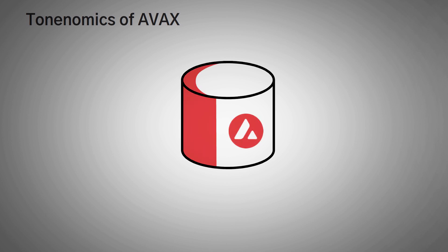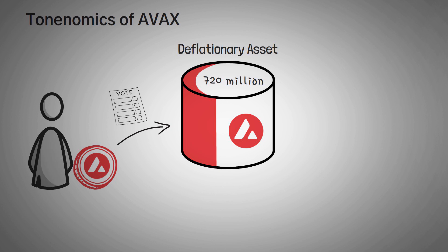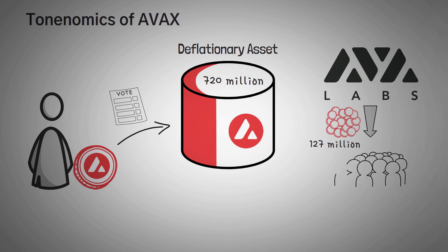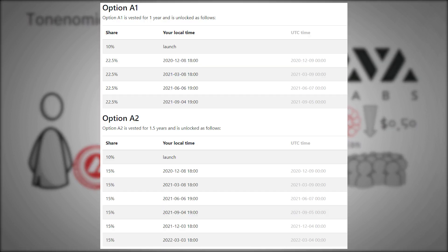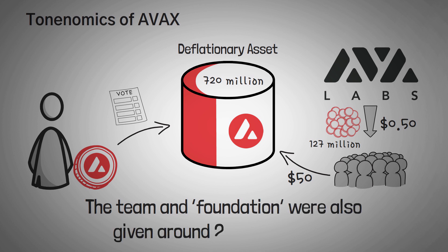First off, there is a max cap of 720 million coins, which immediately makes it a deflationary asset. AVAX coins can also be used for governance on the platform, meaning the more coins you hold and stake, the more voting rights you have, letting you make important decisions about the future of the network. Here's the bad news though: Ava Labs pre-sold 127 million coins when they launched, and many of those coins are subject to an unlocking period. This means many investors who bought the coin at 50 cents may want to lock in some of their 100x profits and sell immediately whenever they can. The good news is that they aren't dumping all of these coins at once. Here's a picture of their unlocking schedule — if you're thinking of investing in AVAX, be mindful of these dates and how the past dates have affected price. It's also worth noting that the team and the foundation were given around 20% of all coins.